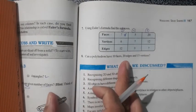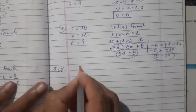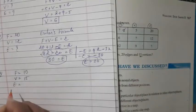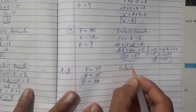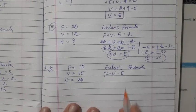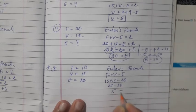Question eight: can a polyhedron have 10 faces, 20 edges, and 15 vertices? Given F = 10, V = 15, E = 20. Check using Euler's formula: F + V − E = 10 + 15 − 20 = 25 − 20 = 5. This is not equal to 2, so such a polyhedron is not possible.